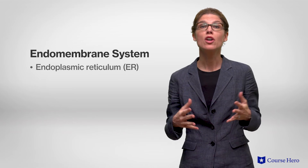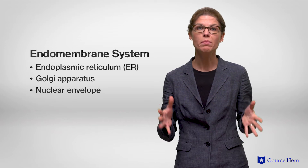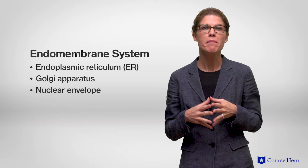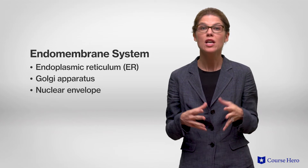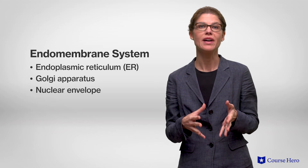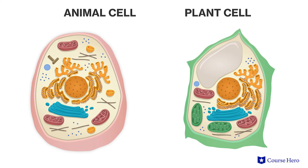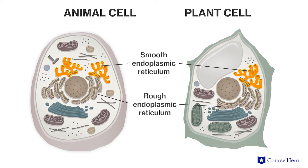The ER, the Golgi apparatus, and the nuclear envelope are all part of the cell's endomembrane system, a system of membranes suspended within eukaryotic cells which helps to divide the cell into functional compartments. The ER is referred to as rough ER if it is studded with ribosomes, or smooth ER if it has no ribosomes on its surface.